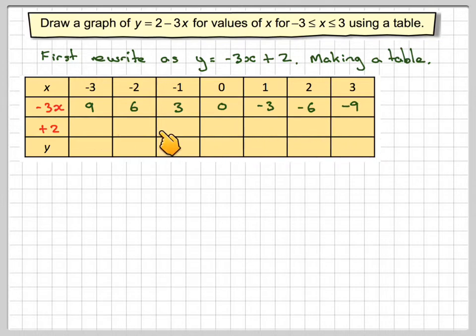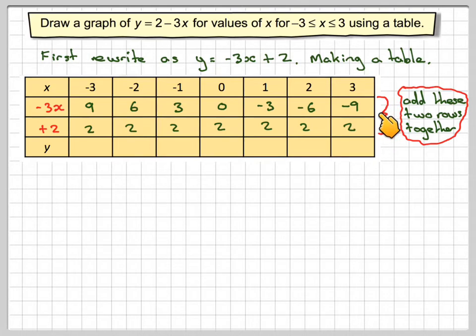Here, all I'm going to do is put a row of 2, because I have to add 2 to each of these things. Next thing to do is I just add these two rows together. So I've got 9 plus 2, which makes 11. 6 plus 2, which makes 8. 3 plus 2, which makes 5. 0 plus 2 makes 2. Minus 3 plus 2, which makes minus 1. Minus 6 plus 2, which makes minus 4. Minus 9 plus 2, which makes minus 7.